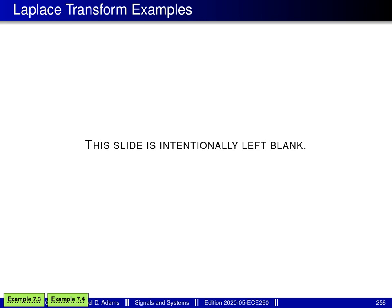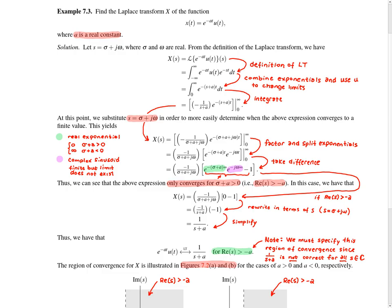I'd like to consider a couple of examples of computing Laplace transforms. In example 7.3, we're asked to find the Laplace transform X of the function x, where x is given by this particular formula and a is a real constant. We use the definition of the Laplace transform to write out this transform more explicitly as a particular integral.